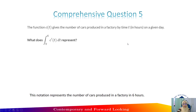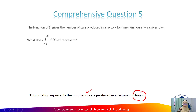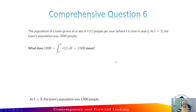Comprehensive question 5: the function c(t) gives the number of cars produced in a factory by t hours on a given day. What does the integral of V(t) dt from 0 to 6 represent? This notation represents the number of cars produced in a factory in 6 hours.